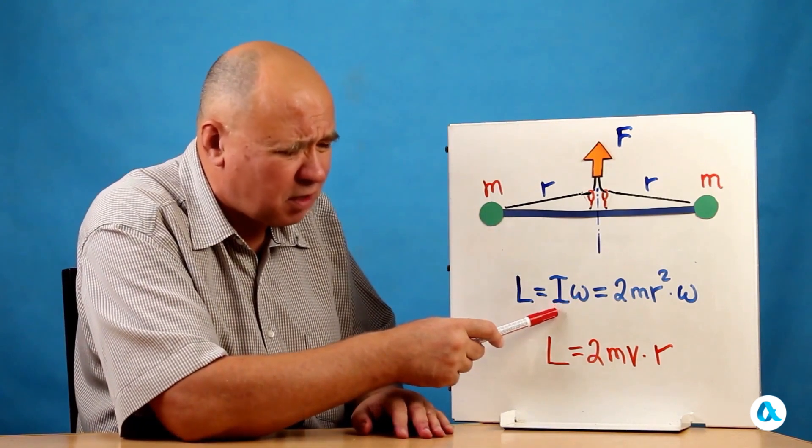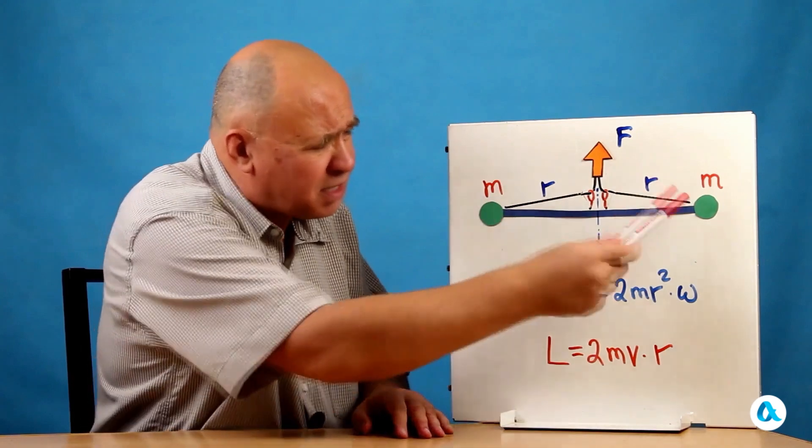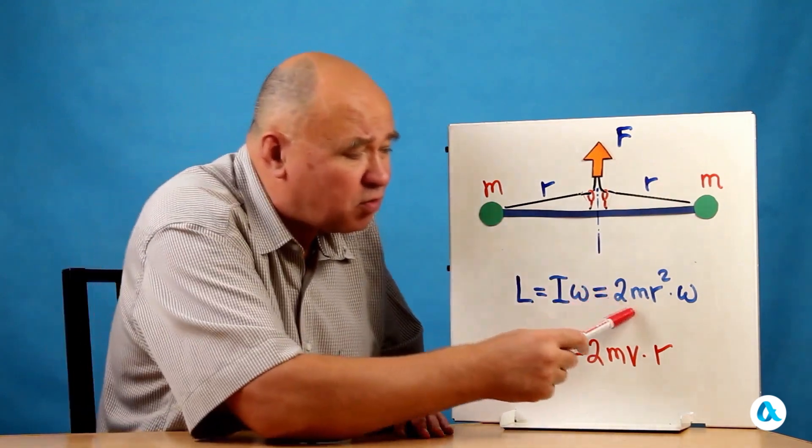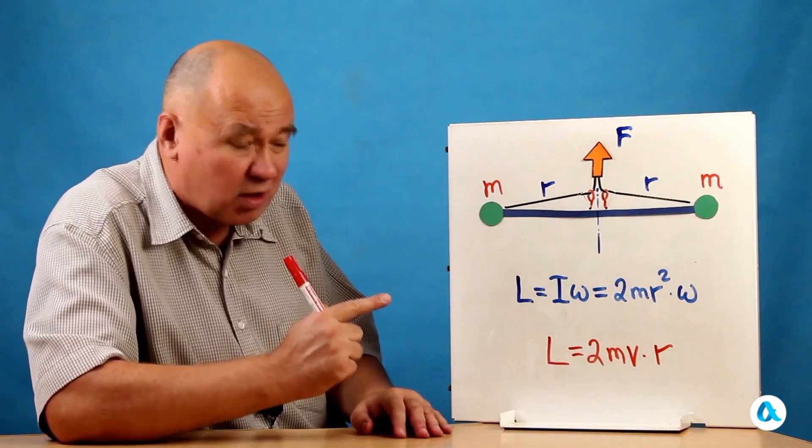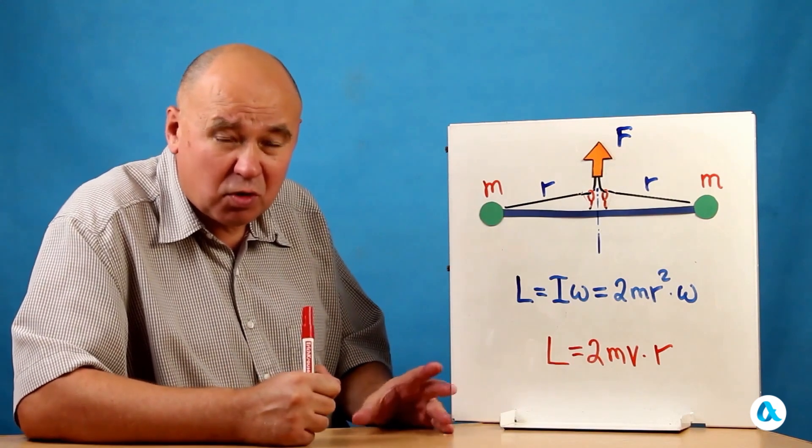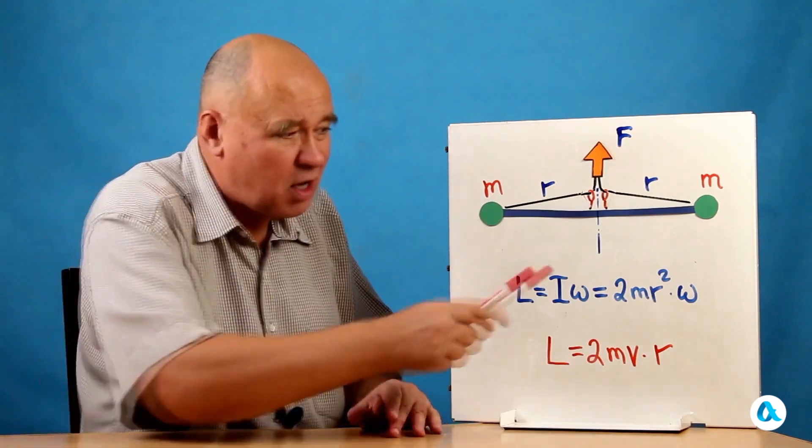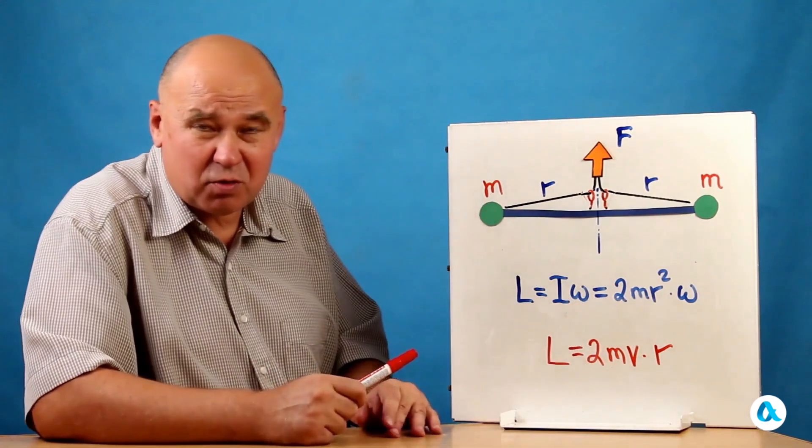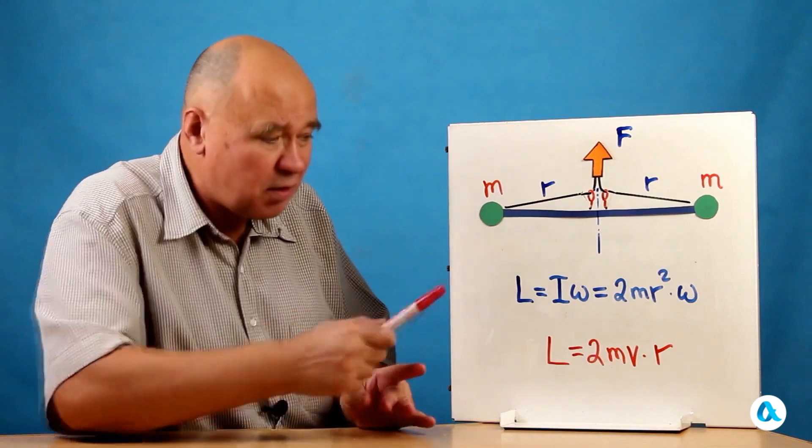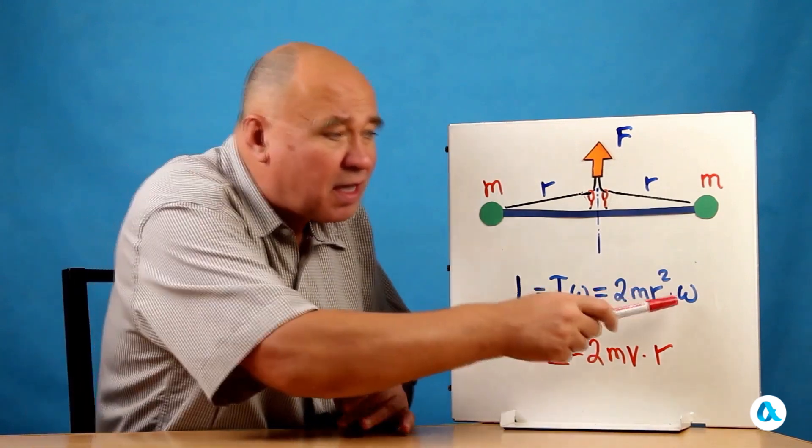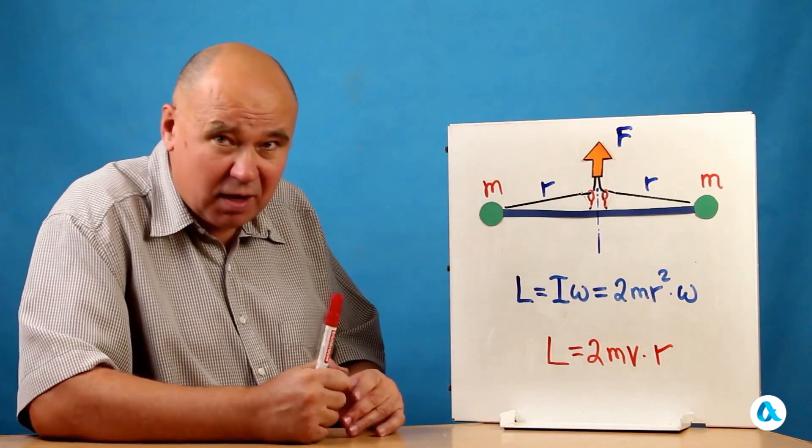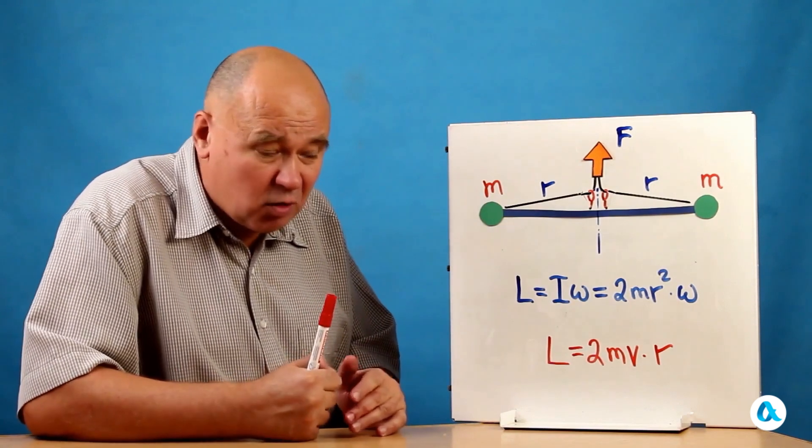The moment of inertia I is 2mR² since we have two masses. Thus, we obtain 2mR² times Ω. And look, if the radius during the experiment is reduced by 5 times, then R² decreases not by 5, but by 25 times. And for L to remain unchanged, the angular frequency must increase by 25 times. Indeed, the system starts to rotate very quickly.